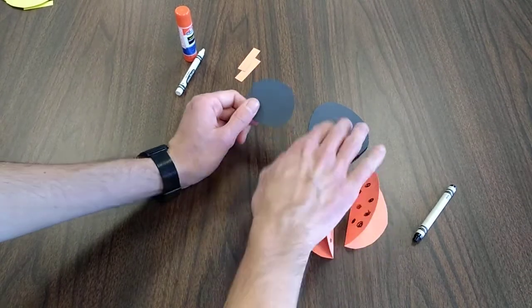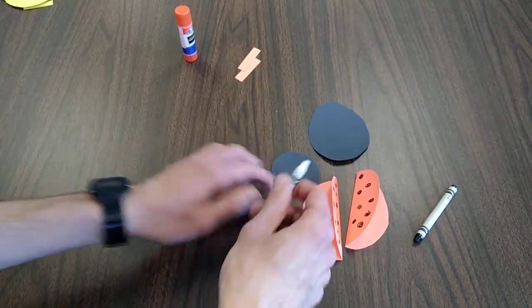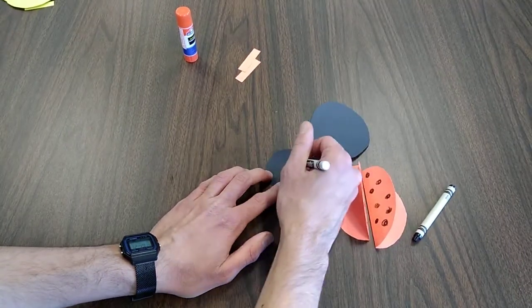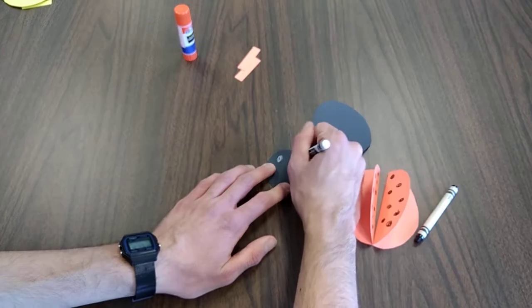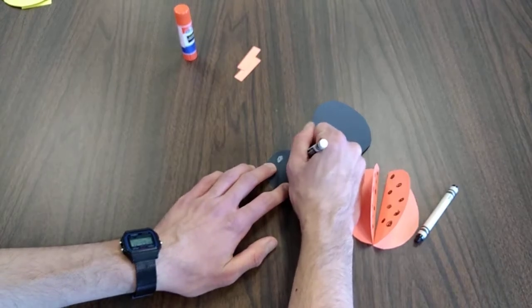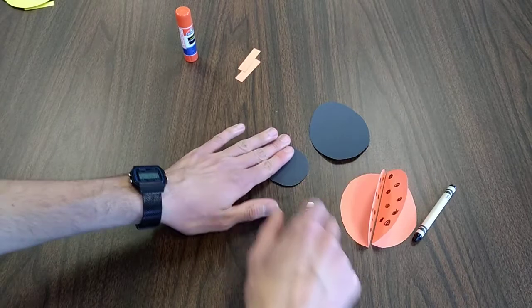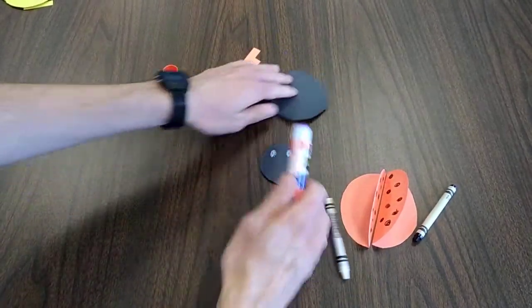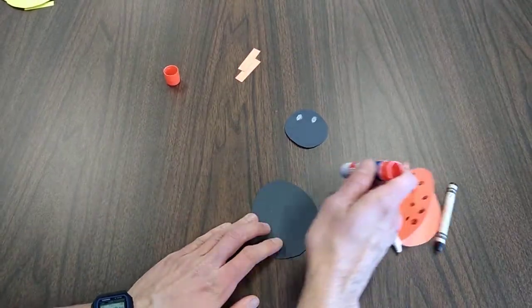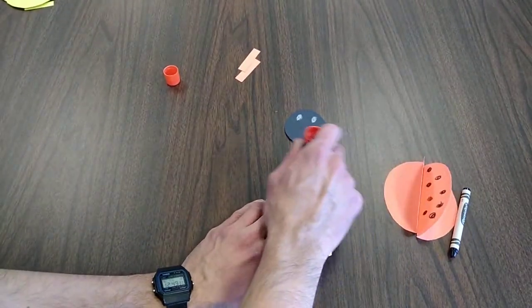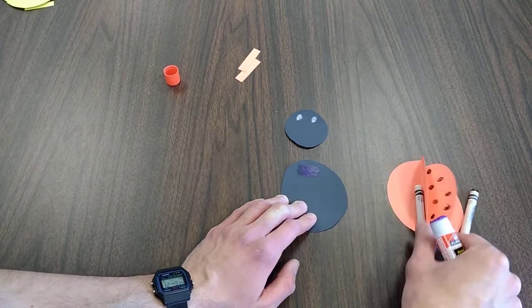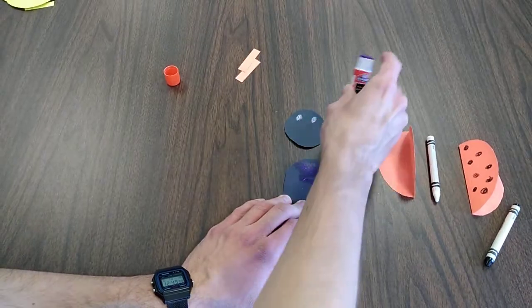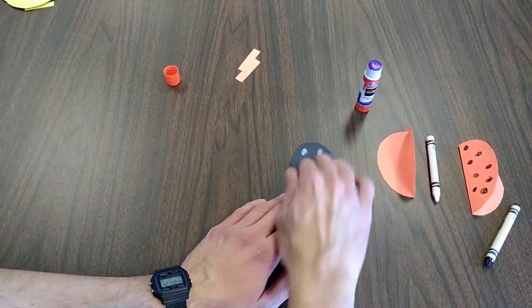Actually, before we glue the wings on, let's get the face ready too. So, I'm just going to draw with the white crayon some eyes on the smaller black circle. Just like that. And so, we'll take our glue on the upper part of the larger black circle, just apply some glue, and stick on the head. There we go.